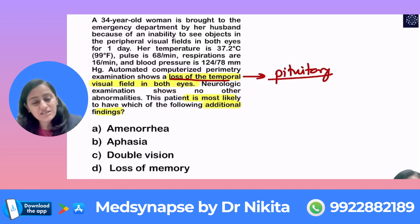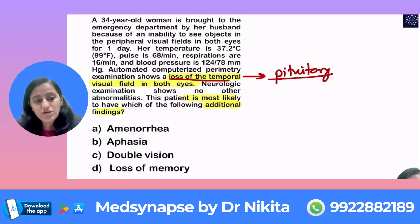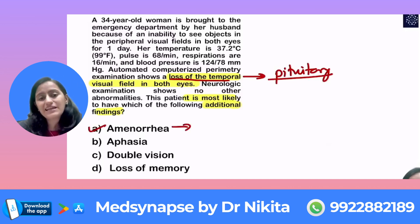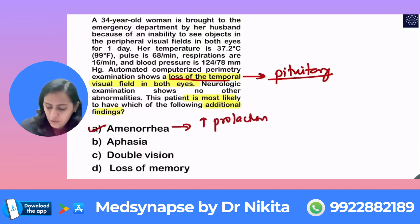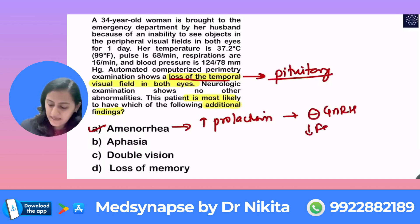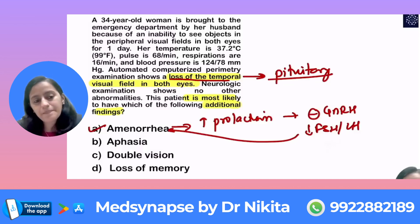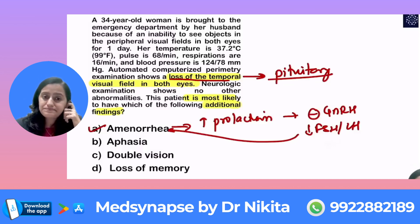Given this pituitary lesion along with the features asked, just based on this you can mark the answer as amenorrhea. The most common pituitary adenoma is prolactinoma — increased prolactin inhibits GnRH, which decreases FSH and LH levels, and that is how it leads to amenorrhea. Prolactinoma with galactorrhea leads to amenorrhea.